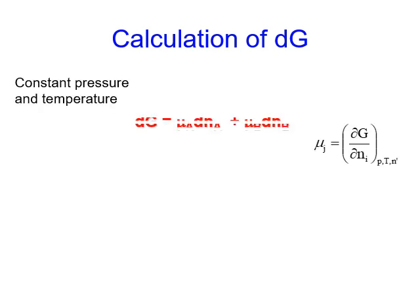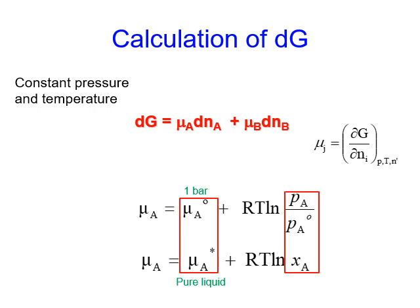Here are some equations we are going to use in this chapter. At constant temperature and pressure for a mixture of A and B, the Gibbs energy change dG equals the chemical potential of A times the number of moles change dN_A, plus mu_B dN_B. The chemical potential mu is the partial derivative of Gibbs energy over number of moles. For a substance A, the chemical potential equals the standard state value plus RT ln of the partial pressure divided by one bar for gas phase, or RT ln X_A, the mole fraction, for liquid phase.